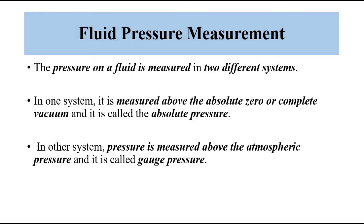When atmospheric pressure is taken as the constant reference, the measured pressure is called gauge pressure. In most fluid measurement instruments — be it manometer, barometer, or anything else — they measure gauge pressure, meaning atmospheric pressure is the reference. In numerical calculations, all measurements are done with respect to zero as the reference. Suppose we decide to measure everything with respect to 3, then all measurements are done with respect to 3.